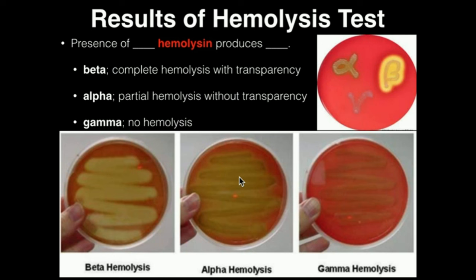If we have gamma hemolysis, this is a misleading term — gamma hemolysis basically means there's no hemolysis, no destruction of red blood cells. All we see is the streak of bacteria, the colonies, and there's no destruction of red blood cells. We can record this as gamma hemolysis, though in your lab manual it may want you to record it as non-hemolysis. Just understand this is also in some schools of thought called gamma hemolysis. Make sure to watch the demonstration video on the hemolysis test.